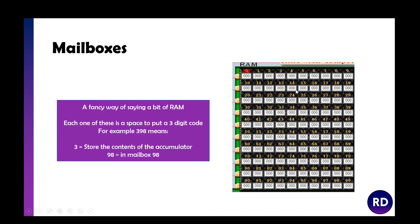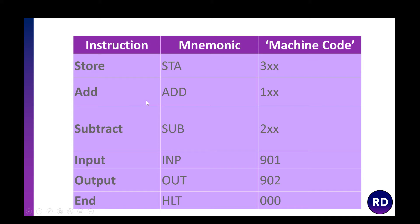These little slots are called mailboxes — a fancy way of saying a slot in RAM. Each one in the LMC is a space for a 3-digit code. For example, code 398: 3 is the machine code for store, and 98 refers to mailbox 98. The main instructions are: STA (store) = 3xx, ADD = 1xx, SUB = 2xx, INP (input) = 991, OUT (output) = 902, and HLT (halt) = 000.